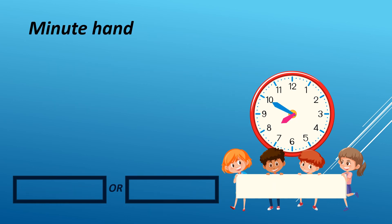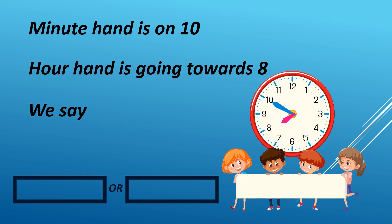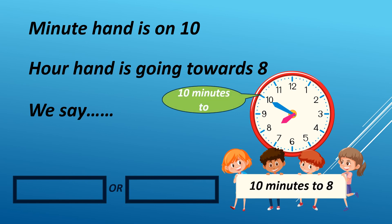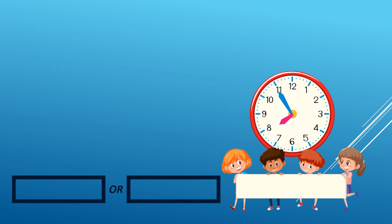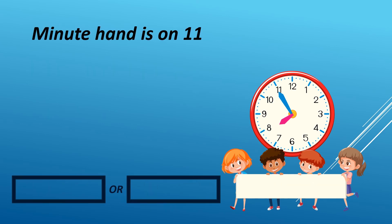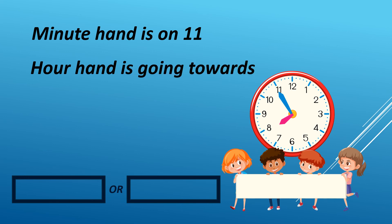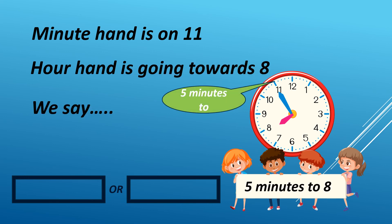When the minute hand is on 10 and the hour hand is going towards 8, we say 10 minutes to 8. It can either be AM or PM. For example, it is 7:50 AM in 12-hour format. We read it as 750 hours in 24-hour format. When the minute hand is on 11 and the hour hand is going towards 8, we say 5 minutes to 8. It can either be AM or PM.